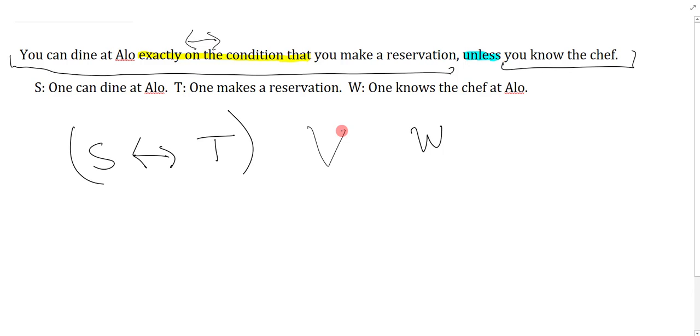But a very natural way to symbolize unless is to say if not one then the other. So if it's not the case that you know the chef, then S biconditional T, and that sort of makes sense. You can even do it the other way: S biconditional T arrow W. Any of these three would satisfy the unless.